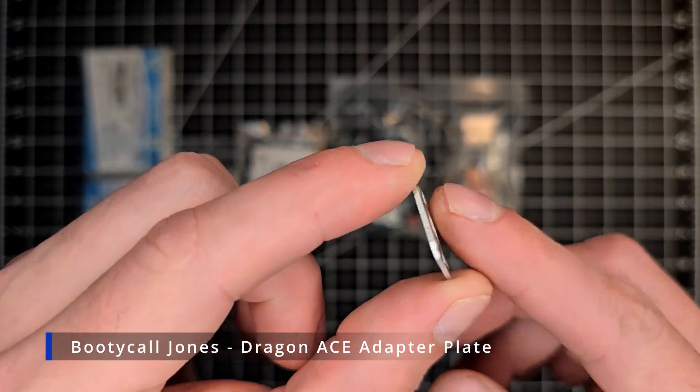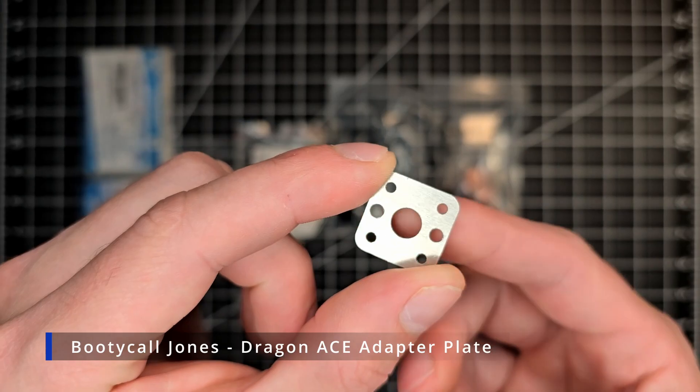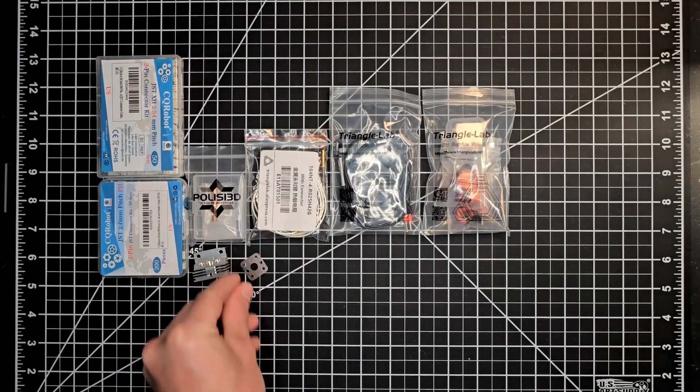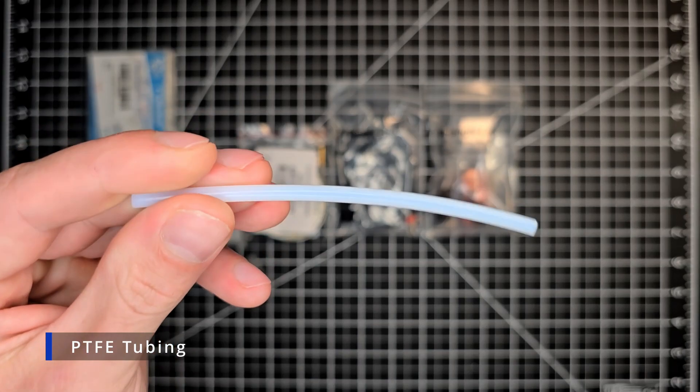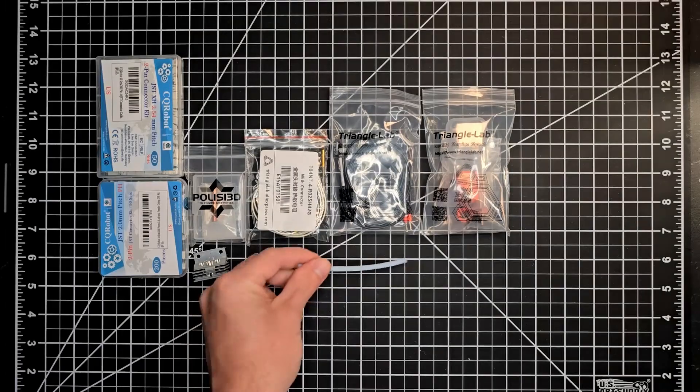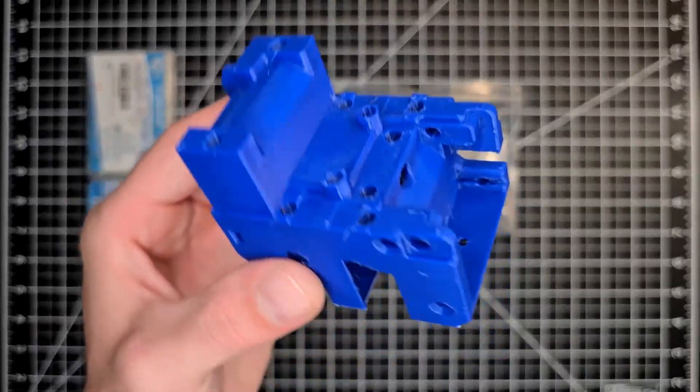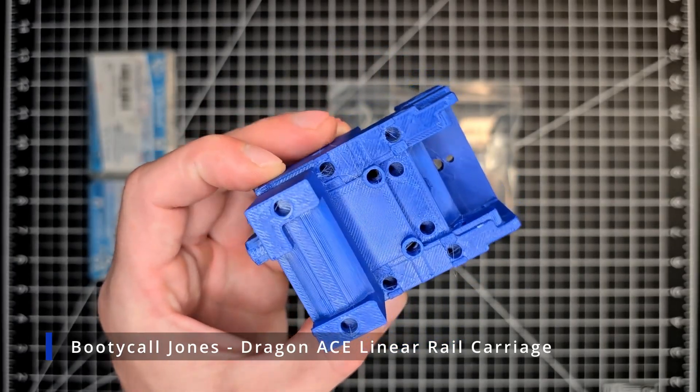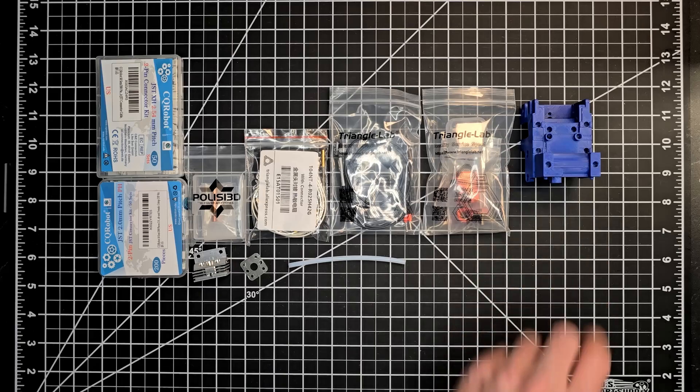An adapter plate which mates up the Dragon Ace hot end to that modified Creality K1 heatsink. A short length of PTFE tubing. Because I'll be doing this install along with the Booty Call Jones Linear Rail Gantry, I do have that printed carriage here as well. The Dragon Ace carriage will be necessary.